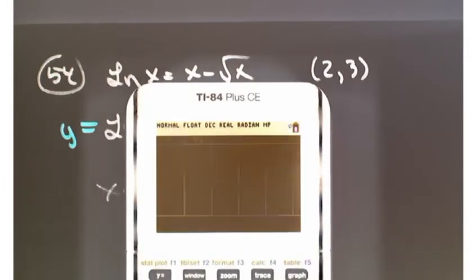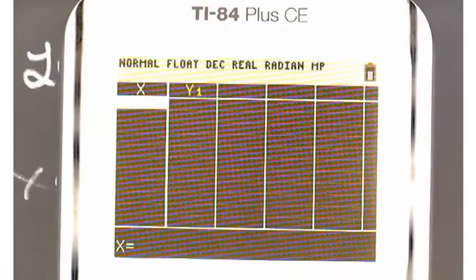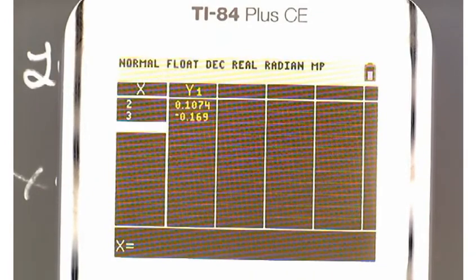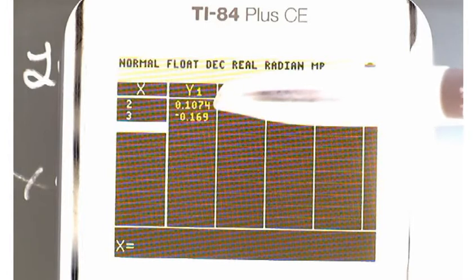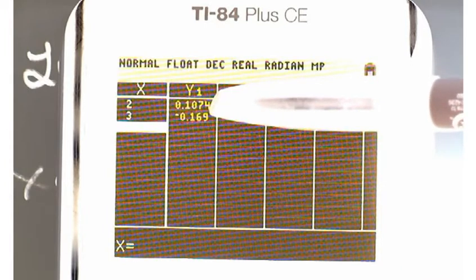You can kind of see that with the tables. If you were to make a table of this and typed in the limits on our problem, two to three, the problem goes, or the function goes from positive to negative.